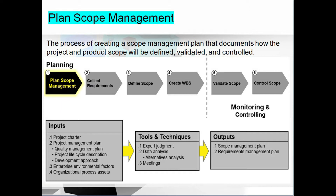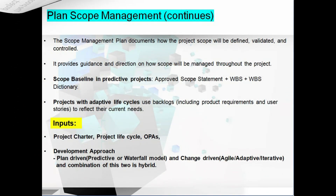The key inputs for this process are the project charter, the project life cycle, and OPAs — organizational process assets. The project charter includes a high-level description of the project, service, or result, while the project life cycle breaks the project into different phases. We can also use old project history records and lessons learned for planning efforts. Every project has a development approach: plan-driven (predictive/waterfall), change-driven (agile/adaptive/iterative), or a combination of both (hybrid).